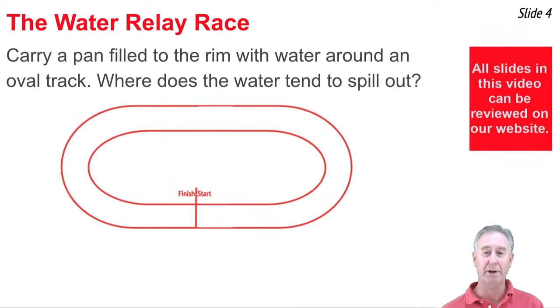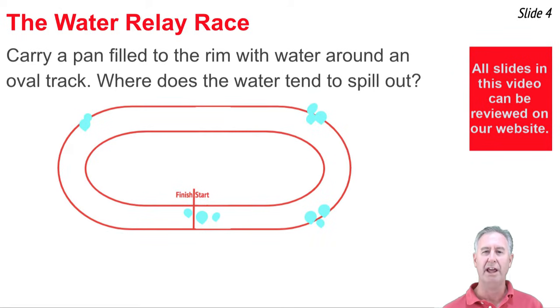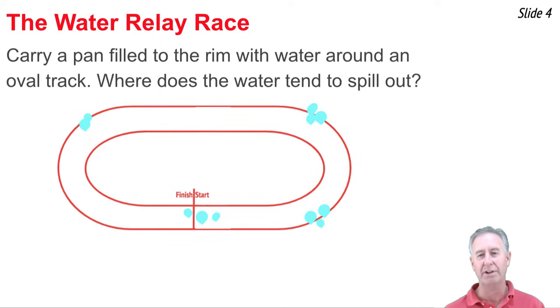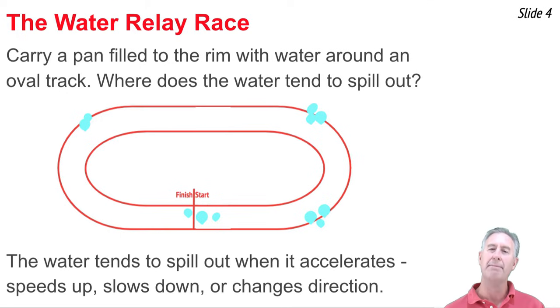Here's what you notice would happen. You would notice the water falls out at the start line, at the finish line, and at the turns. That's what you observe. Time after time, every student observes one of these things. That's where the water spills over the rim of the container. Why does this happen?